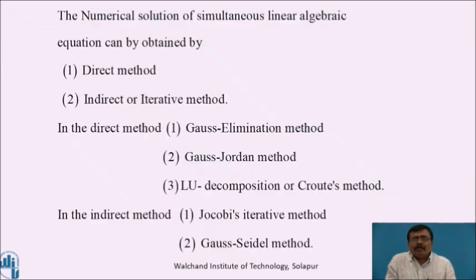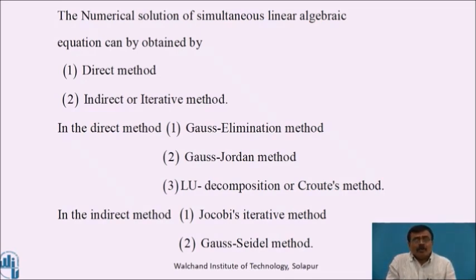The numerical solution of simultaneous linear algebraic equations can be obtained by two different methods. One is the direct method, which gives the exact solution. The second is the indirect method or iterative method, which gives the approximation. In the direct method, we discuss three different methods: namely the Gauss elimination method, Gauss-Jordan method, and LU decomposition, also called Kraut's method. In the indirect method, we discuss two different methods: Jacobi's iterative method and the Gauss-Seidel method.